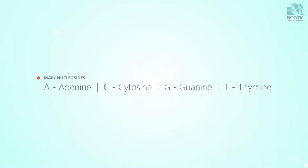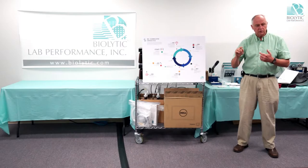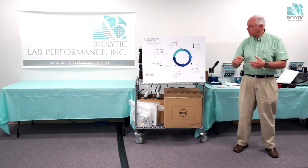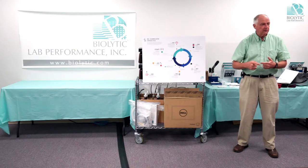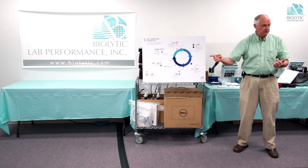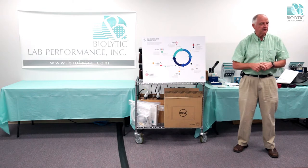DNA is made up of four bases, typically referred to as A, C, G, and T — adenine, cytosine, guanine, and thymine. We're adding those one at a time to grow our chain, our molecule.